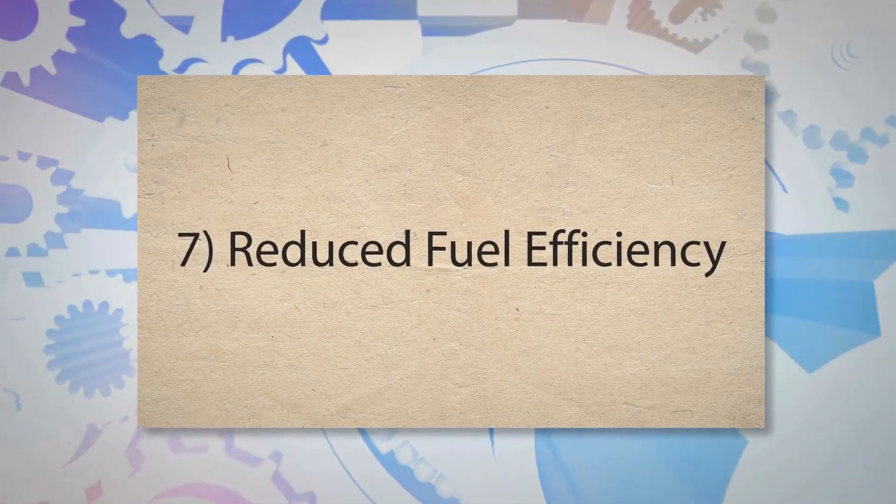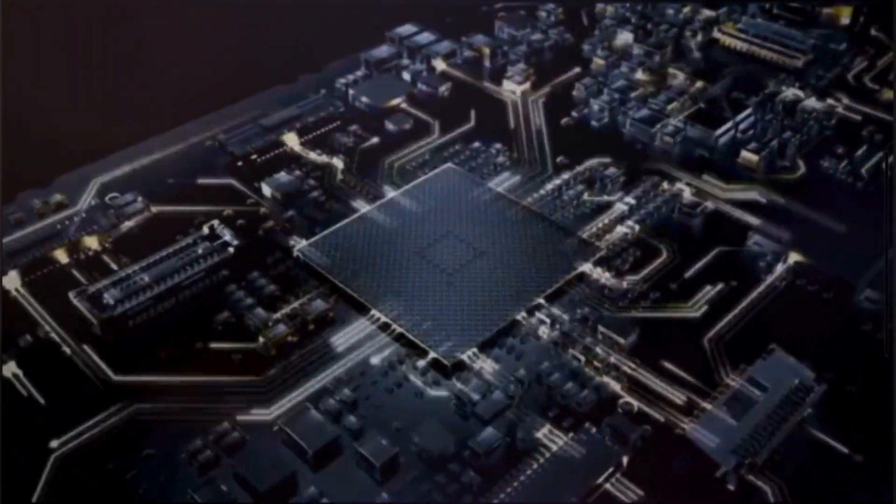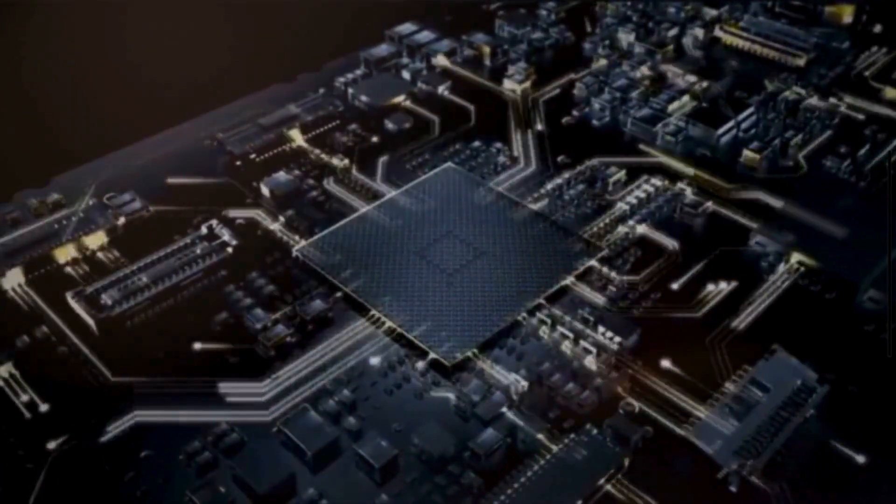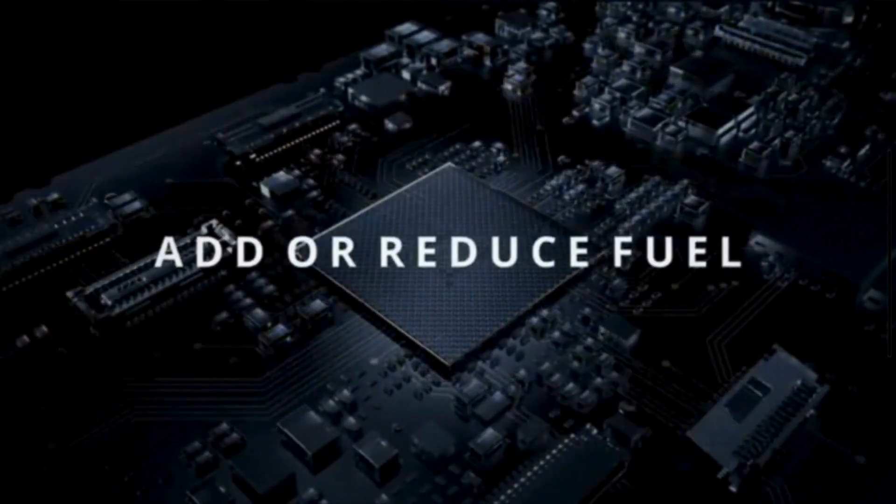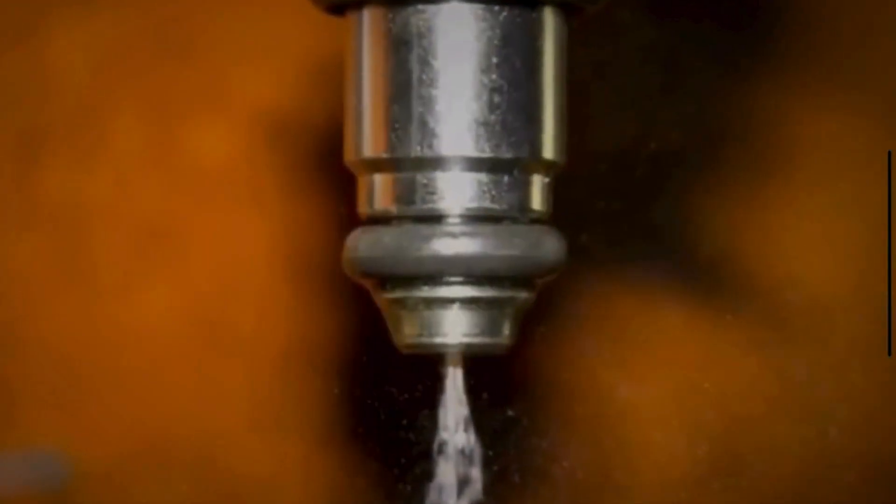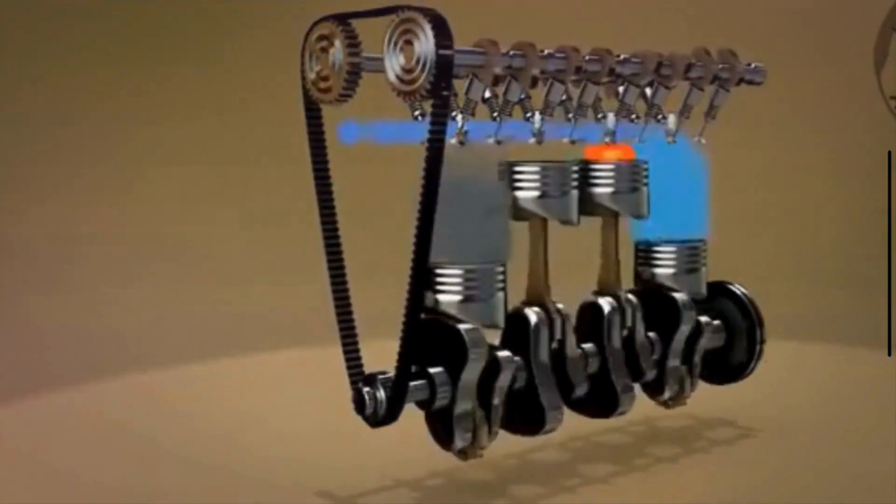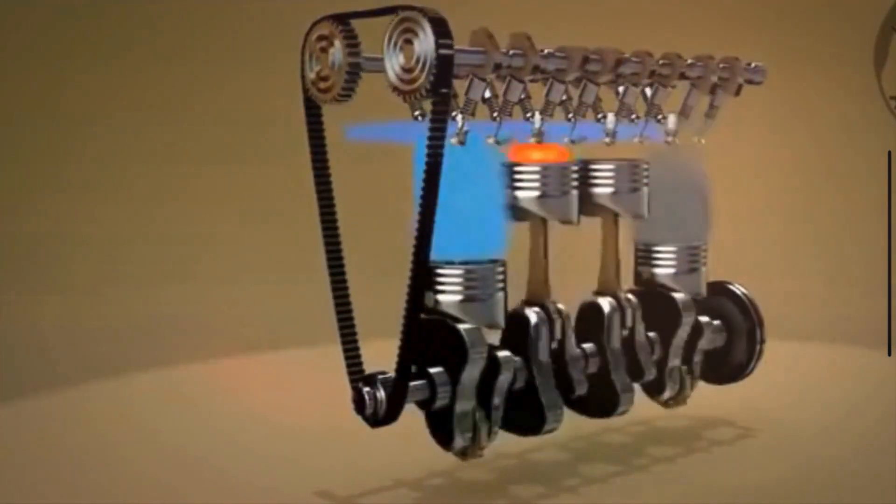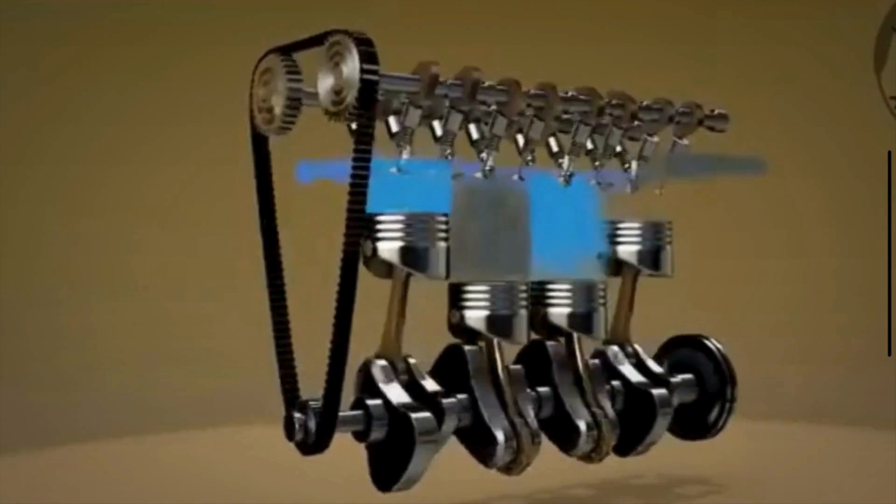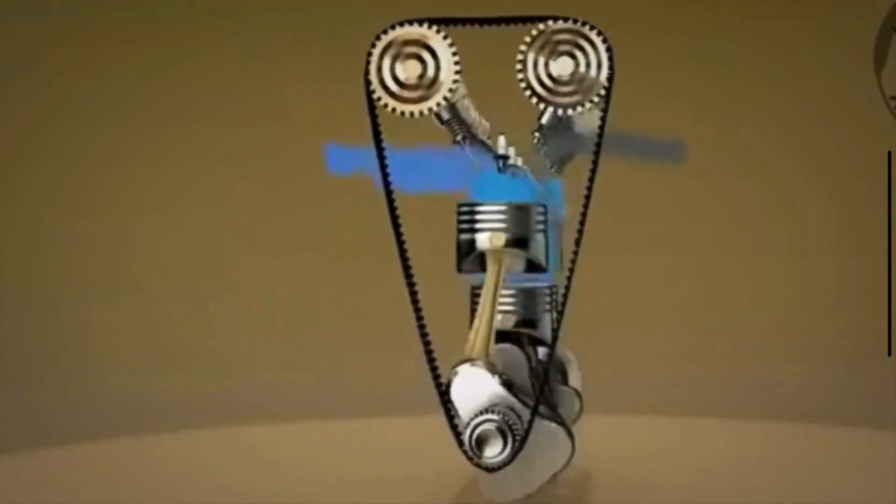7. Reduced fuel efficiency. The ECM adjusts the air fuel mixture and ignition timing for optimal fuel efficiency based on the data from the crankshaft position sensor. If the sensor is faulty, the ECM may deliver more fuel than necessary or at the wrong times, leading to inefficient combustion and increased fuel consumption.